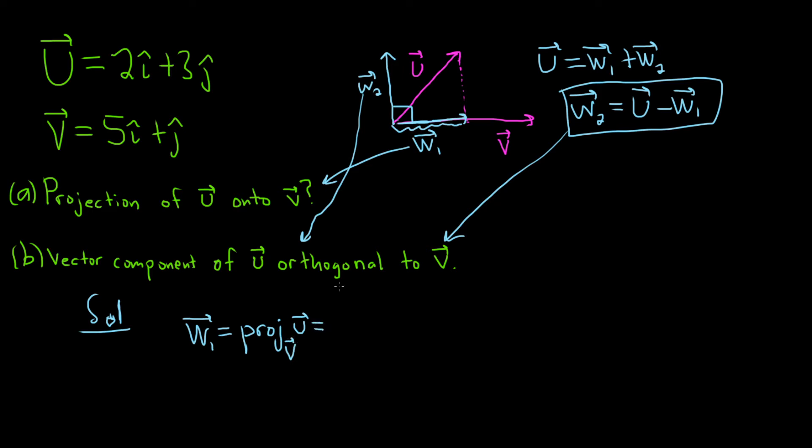So w1 is equal to the projection of u onto v. The formula is pretty easy to memorize. It's u dot v over the magnitude of v squared times our vector v. This is going to be the projection of u onto v. It's like you're taking that vector u and you're just dropping it down, projecting it onto v.